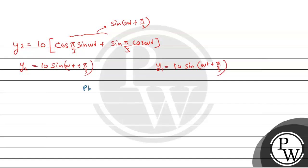The phase difference between y1 and y2 is zero, because y1 has phase (ωt + π/3) and y2 also has phase (ωt + π/3) after conversion.